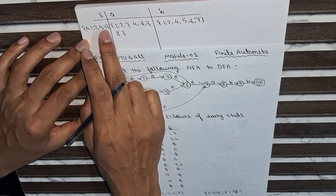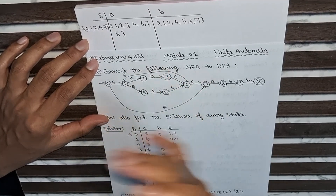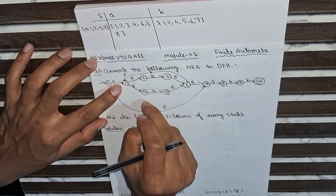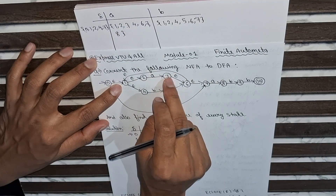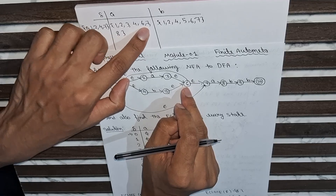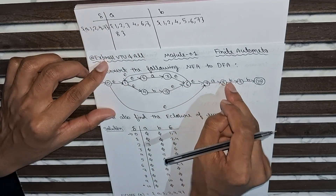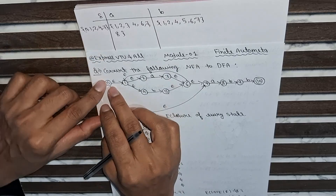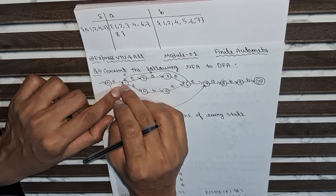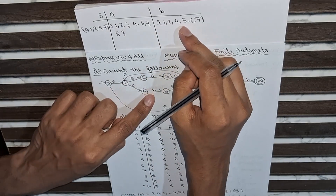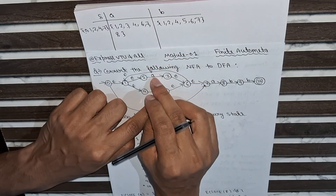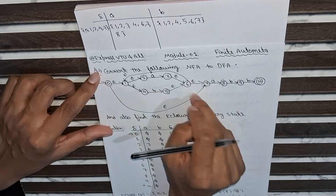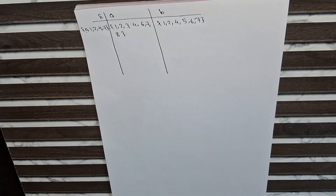From the first state zero, one, two, four, seven — we include all states accessible with epsilon and with input symbol a. With epsilon from zero: one, then two, four; with a: three is accessible, then six, then seven, then eight — but after eight there is a b input symbol so we cannot include further. For input b: from state one we get five, not three since that requires a; then six, then seven — giving one, two, four, five, six, seven.